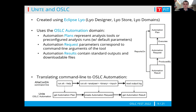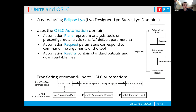Since this is OSLC Fest, I have some more details about how we use OSLC in Unite. Unite was created using Eclipse Lyo, and the resources available there. We used Lyo Designer, Lyo Store, and Lyo Domains, which really made it so much easier to create everything. You can see the automation domain, which basically consists of automation plans, automation requests, and automation results. We use automation plans to represent individual analysis tools — each tool will have its own automation plan. But you can also define multiple plans for a single tool and define different parameters or provide default values.